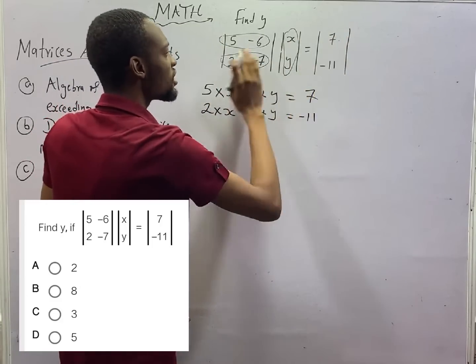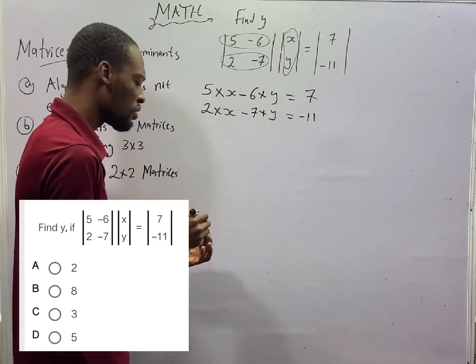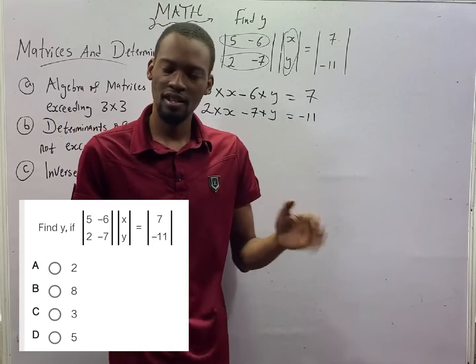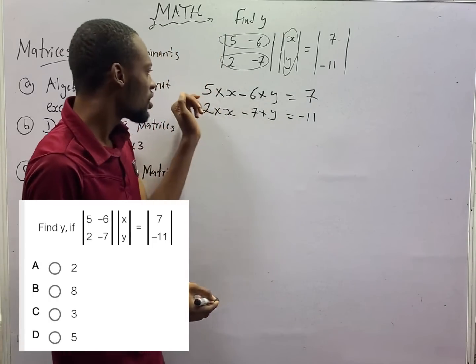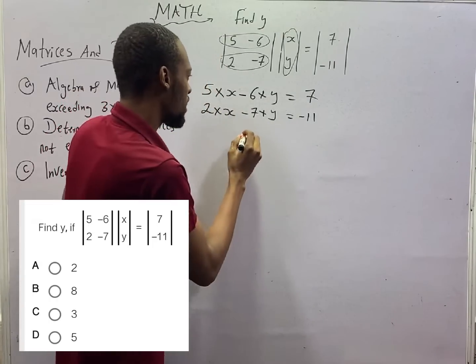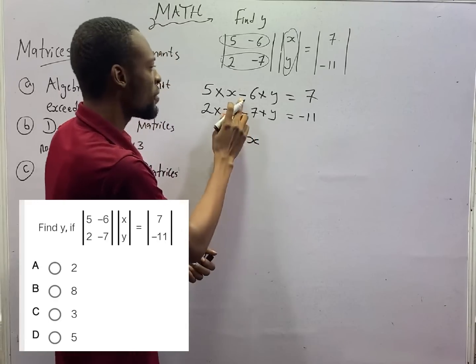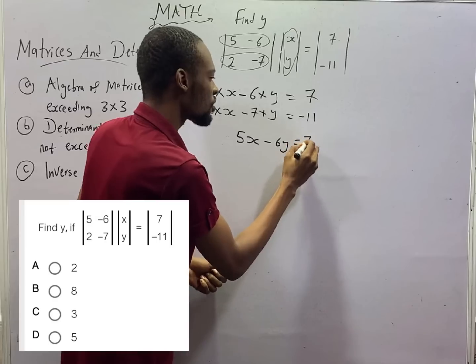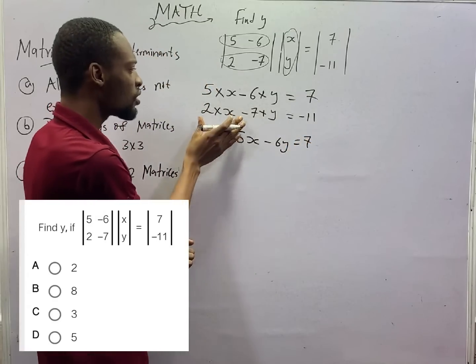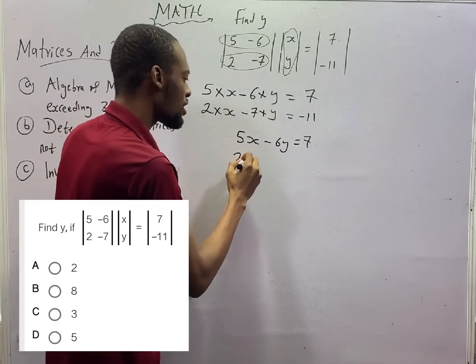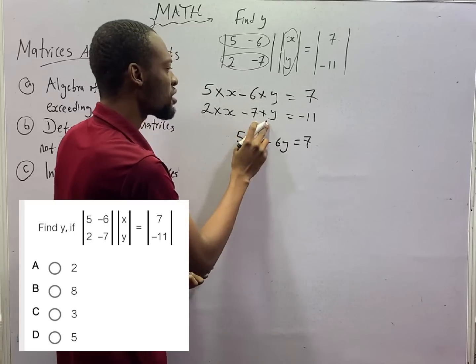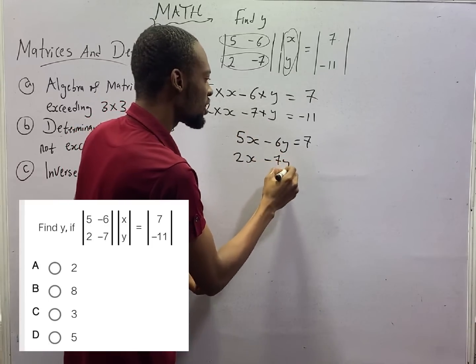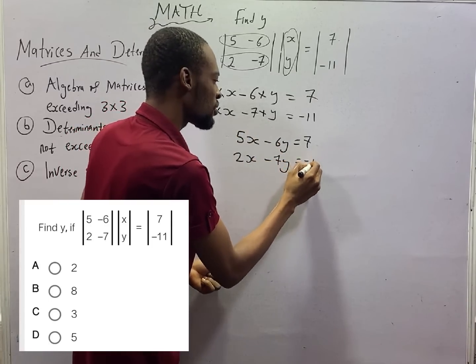So, here equals this. Here equals this. With this, food is ready for you. 5 times S is 5S. Minus 6 times Y. That is minus 6Y. This is equal to 7. 2 times S is 2S. Minus 7 times Y. That is minus 7Y. This is equal to minus 11.